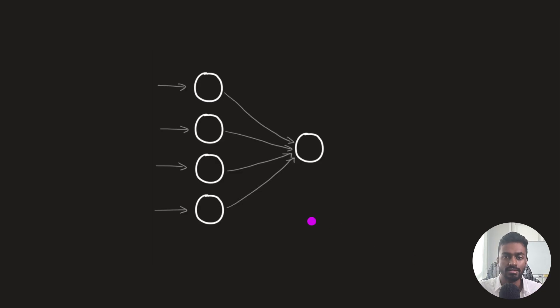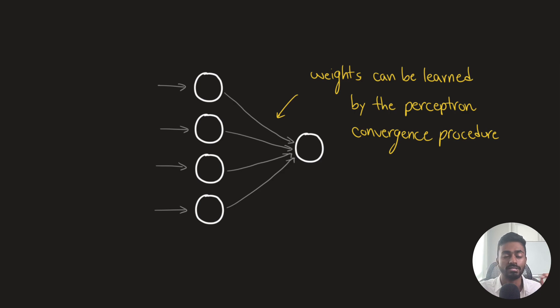Now this here is going to be the computation model for the perceptron, the original perceptron, with its single learnable layer over here. Now these are going to be binary threshold units where there's a single weight layer. We have input features and we have an output response. And the weights here are going to be learned by the perceptron convergence learning procedure, which we have done a lot more in a previous video.